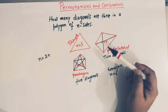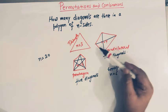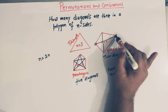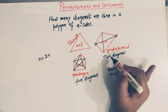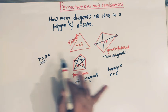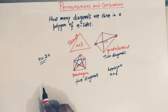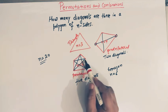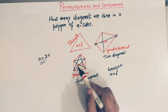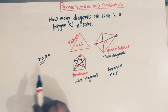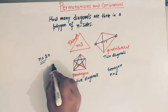A diagonal is generated by joining two points. To draw a diagonal we need two points. A polygon has n sides, so it has n vertices. Therefore we have to select two points out of n points.